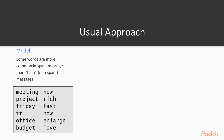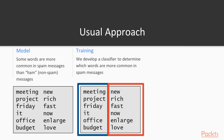Usually a spam detector views messages as bags of words. Some words are more common in spam messages and some are more common in non-spam messages, often called ham in this context. Training usually involves deciding how likely a message is to be spam when certain words appear. The algorithm will learn which words to associate with spam and which to associate with ham.